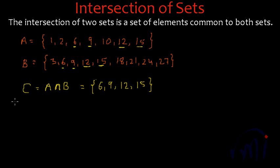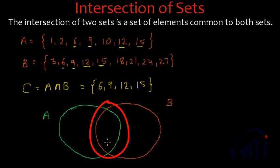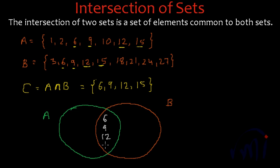And how do we represent it using a Venn diagram? Let me represent set A in green. So let's assume that this green circle represents set A and this orange circle represents set B. The elements common to both the sets will be written in the overlapping area of both the circles. So we'll have 6 over here, we'll have 9, we'll have 12 and we'll also have 15 over here.